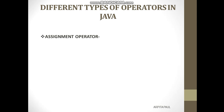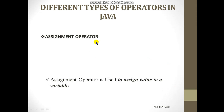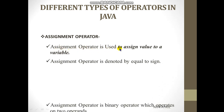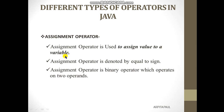First comes the assignment operator. The assignment operator is used to assign a value to a variable — we use this operator to assign a value to a specific variable. It is denoted by the equals-to sign. The assignment operator is a binary operator because it requires a minimum of two operands at the same time.